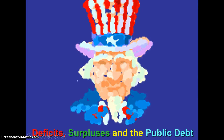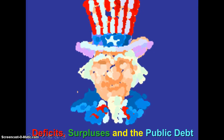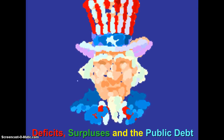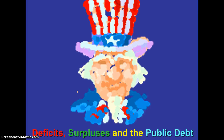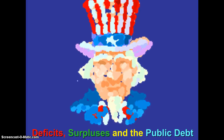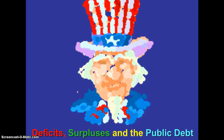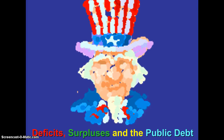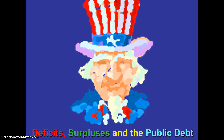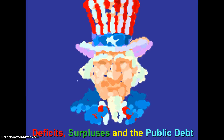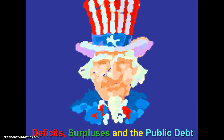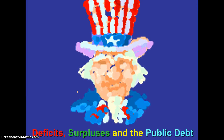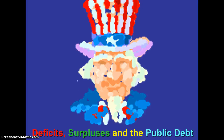Going for three for three today. This is my third voiceover. This is the last PowerPoint of Unit 7. We still are going to have a quiz over these PowerPoints, Chapter 16 and 19, and then we have one more unit and we are done with the macro part of the course. But this PowerPoint is called Deficits, Surpluses, and the Public Debt.